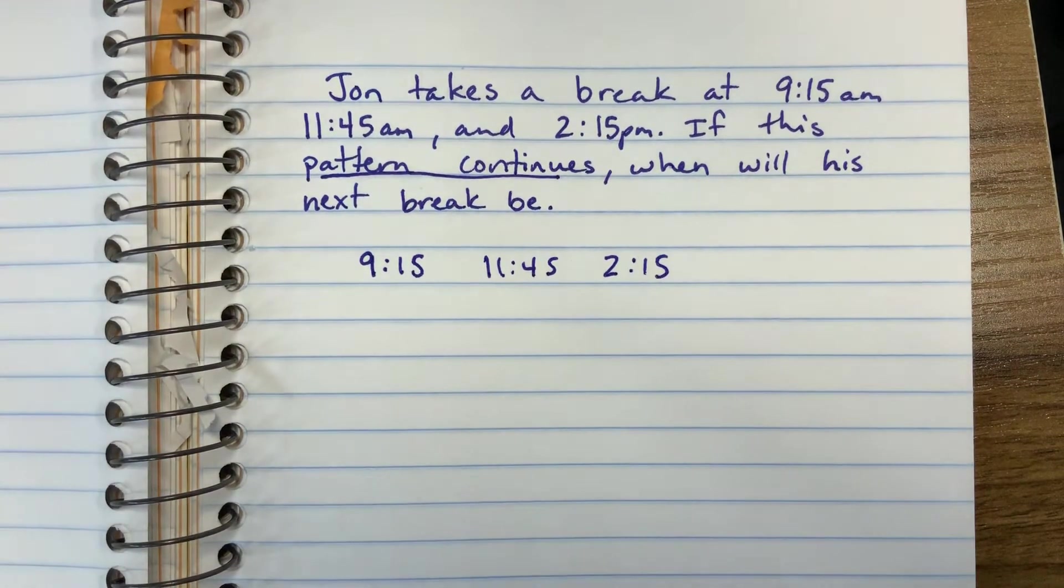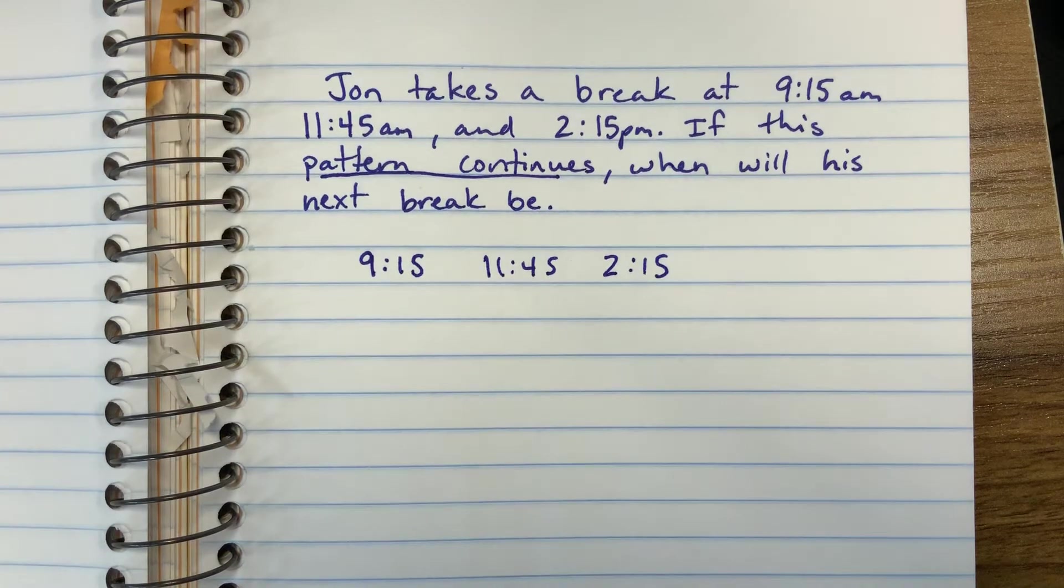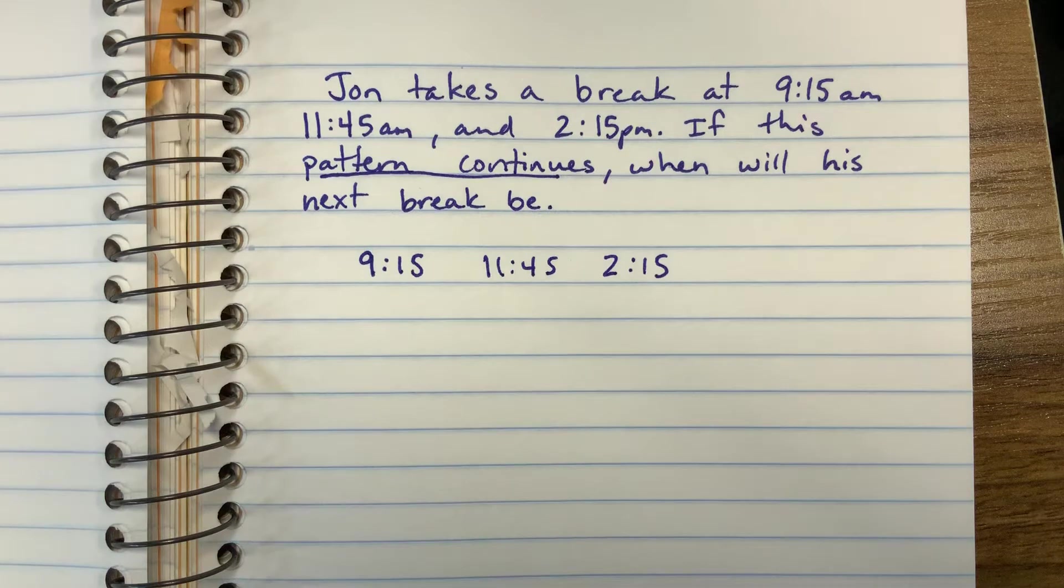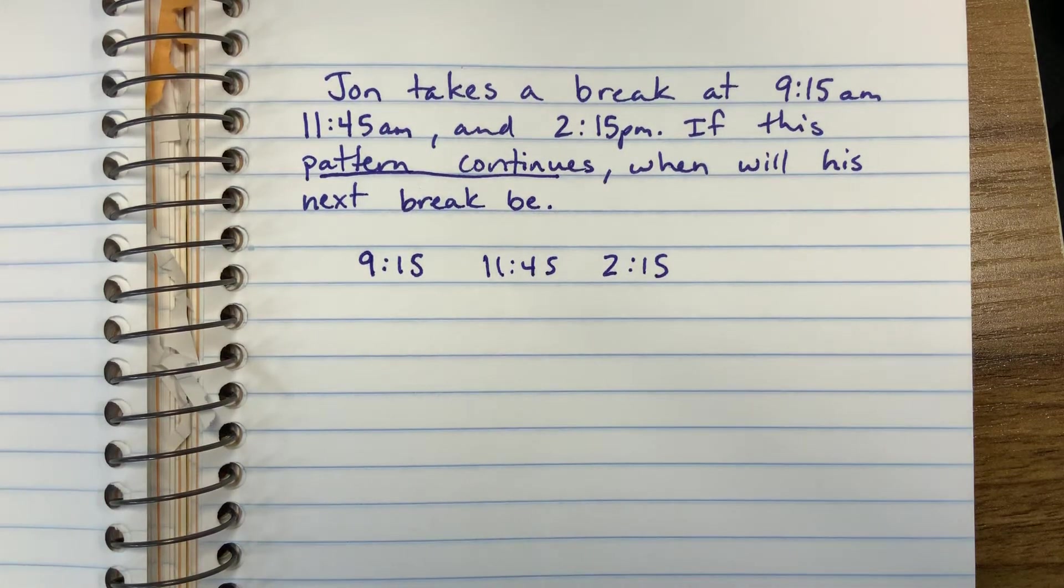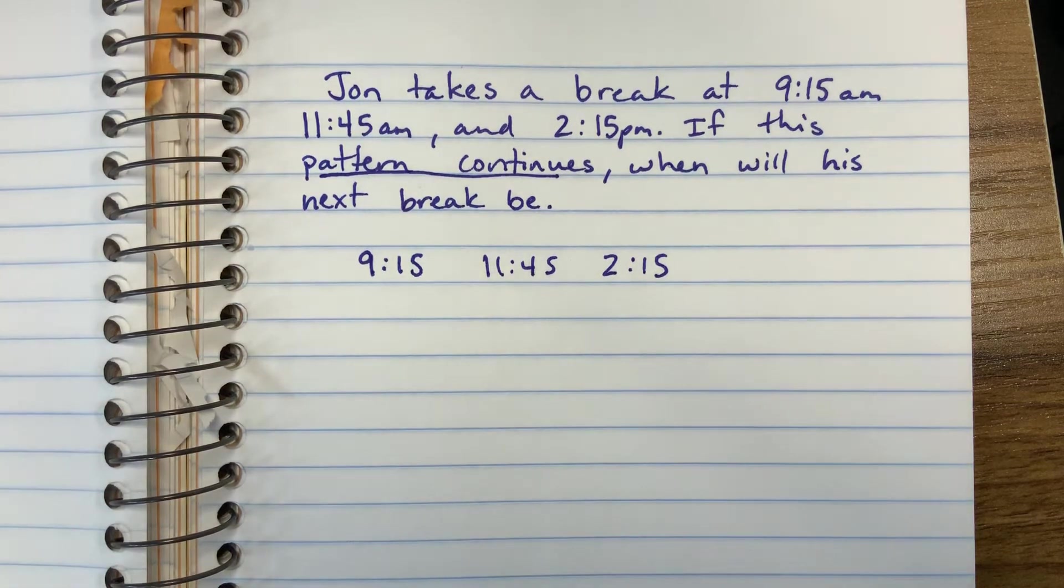Now when you work with time and math, it's very different than just regular numbers. Because our regular number system is based on a base 10 system, which means when you start at 1 and get to 10, you add a 0 and start back at 1, but change the 10s place. Time does not work like that.